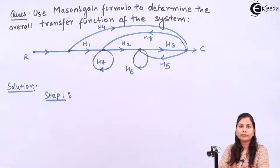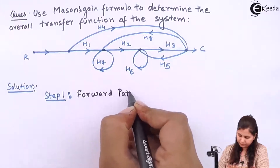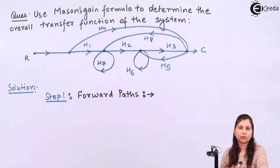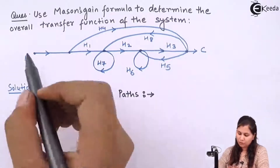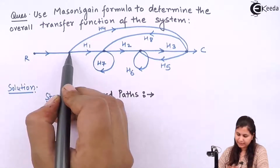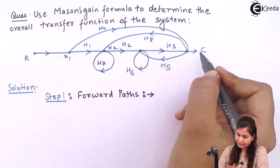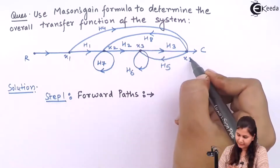We have to find out the forward paths of the system. A forward path is the path which starts from the source node and terminates at the sink node, and along that path none of the nodes are traversed twice. Here we have nodes R, X1, X2, X3, and X4.